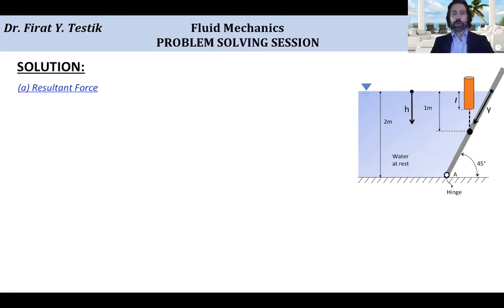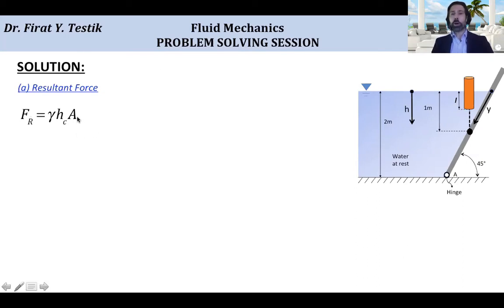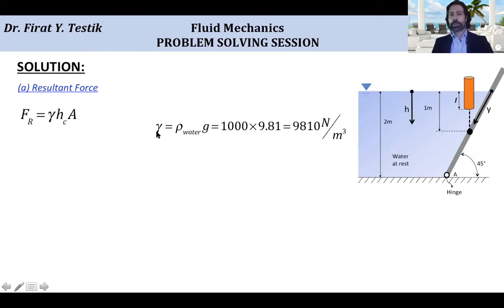First, in this problem, we need to find the resultant force. The resultant force equation is: resultant force equals the specific weight of the fluid — here our fluid is water — times the depth of the centroid hc of the inclined surface, times A, the area of the surface. Specific weight is defined as density of water times gravitational acceleration. Density of water is 1000 kilogram per meter cubed, gravitational acceleration is 9.81 meter per second squared, so specific weight is 9810 Newton per meter cubed.